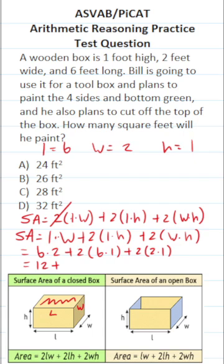Six times one is six times two is twelve. Two times one is two times two is four. Twelve plus twelve is twenty-four, plus four is twenty-eight. So he's going to be, in other words, painting C, 28 square feet if he's going to paint the box excluding the top.